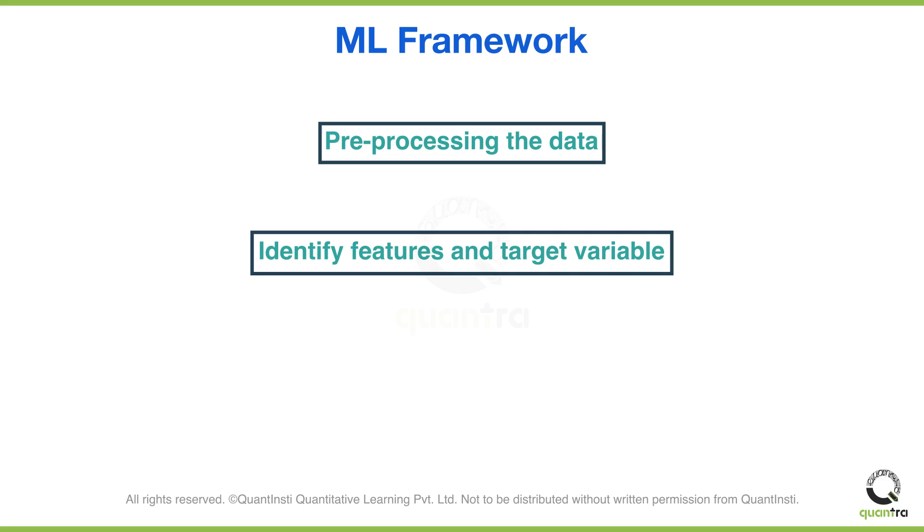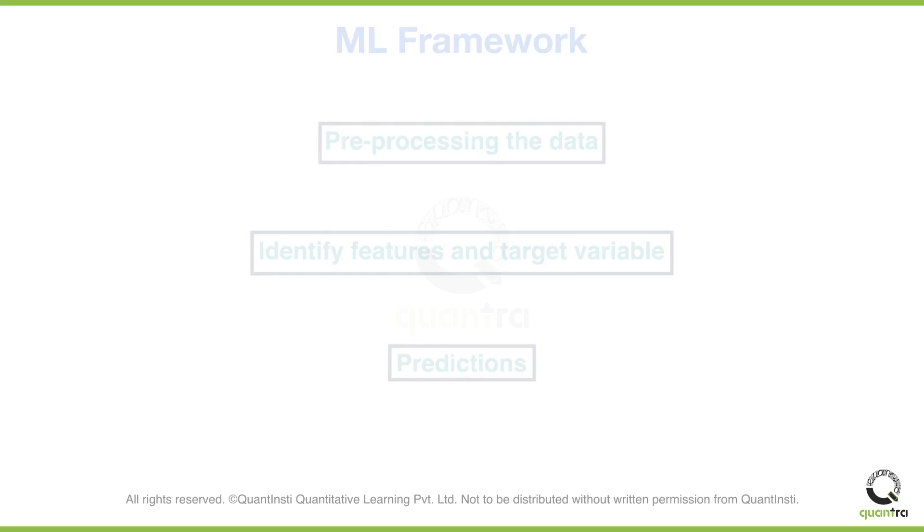The third and final step is applying the ML model to make predictions. There are also many subcomponents in this framework which you have already learned in detail in the previous sections of this course. In the upcoming part of the video, we will go through each of these steps with respect to our initial problem of forecasting IV values.